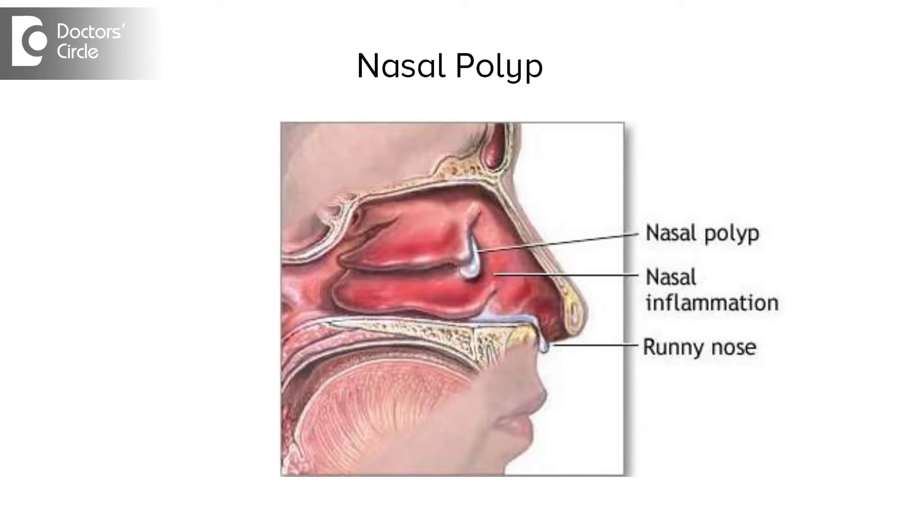Nasal polyps are actually outgrowths of the lining mucosa — that is the lining of the inside of the nose and the sinuses. When they tend to swell up and come and occupy the space in the nasal cavity, then they are called as polyps.